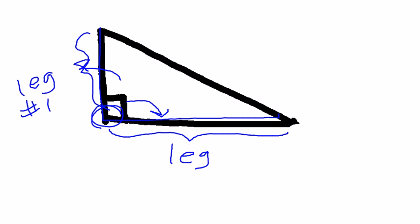So we can write this as leg number one and leg number two. And this side right here is the longest side. And it's also right across the right angle. So it is called the hypotenuse.